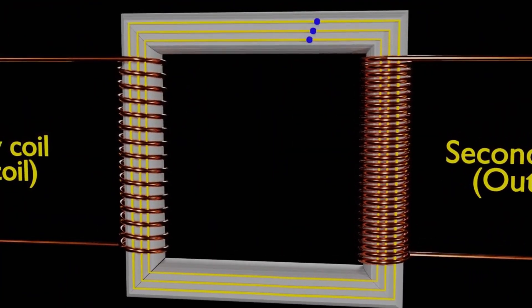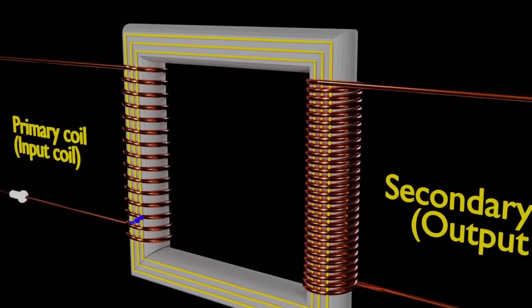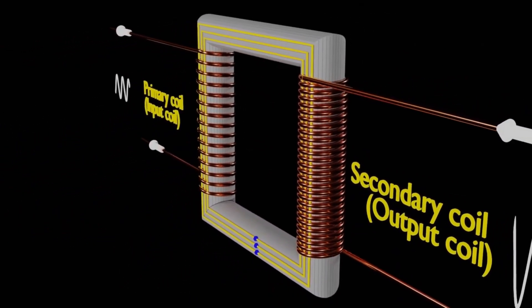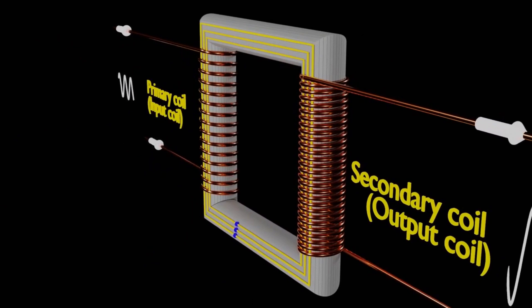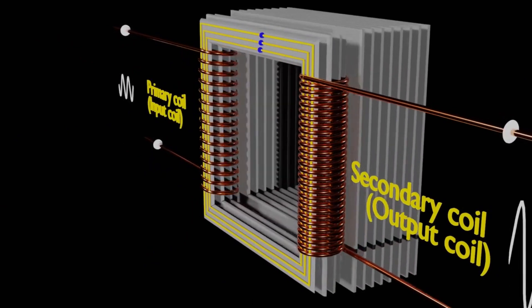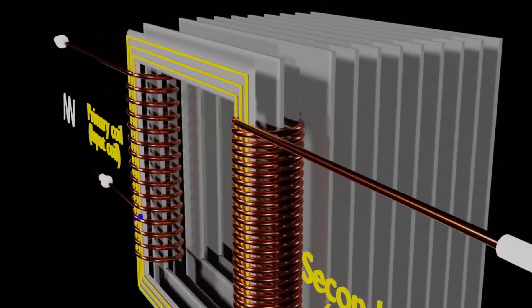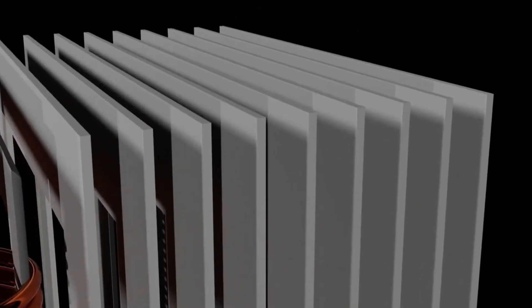Eddy currents, while a natural occurrence, can lead to significant energy losses. This is where the concept of lamination comes in. The transformer core is laminated to effectively tackle the challenge posed by eddy currents. But how does this work?